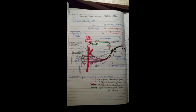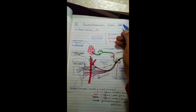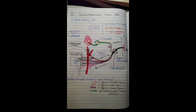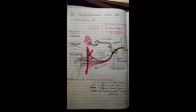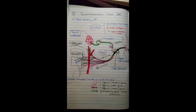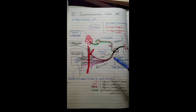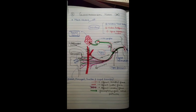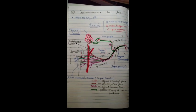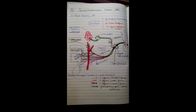Now we are going to study about the 9th cranial nerve, which is the glossopharyngeal nerve. The glossopharyngeal nerve is basically a mixed nerve, meaning it will have both efferent fibers — that is, the motor fibers — and the sensory fibers. We will learn it step by step, as there are three kinds of fibers present in the glossopharyngeal nerve.